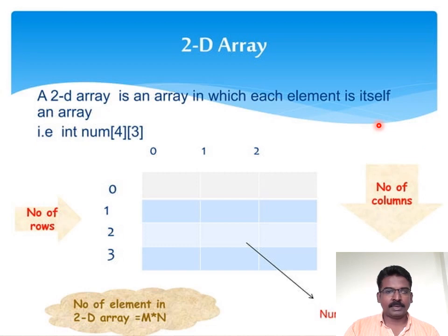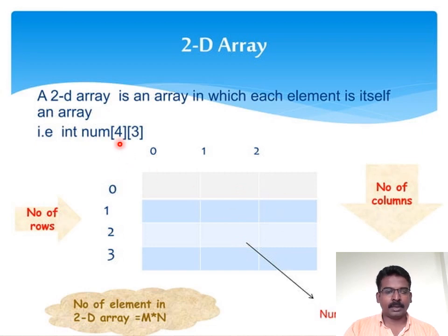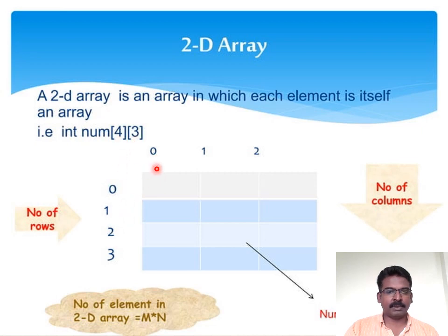Coming to two-dimensional arrays: a two-dimensional array is an array which has two subscripts, meaning elements are stored in two different directions. The best example is a matrix, since a matrix has rows and columns. Two-dimensional arrays are mostly used to implement matrix operations. The declaration is similar to a one-dimensional array but with two subscripts — for example, four represents the number of rows and three represents the number of columns.